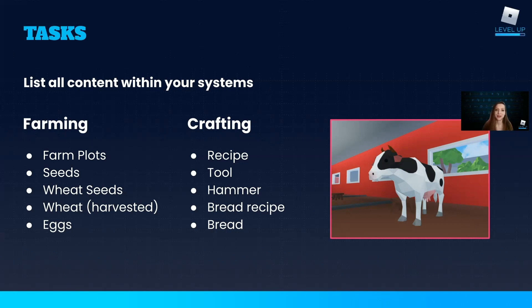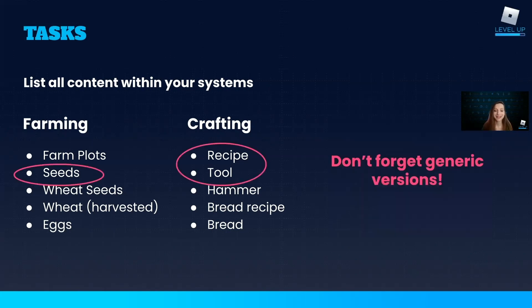In the crafting system, players have recipes they can unlock, tools — with a specific example being a hammer — and bread as a particular recipe, and the baked bread item that results. Note that I listed seeds and wheat seeds separately, as well as recipe and bread recipe, and tool and hammer — because those generic terms can also be used to create quest tasks, and they give players more freedom since there are more options to complete them.